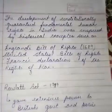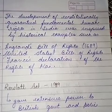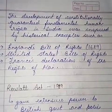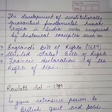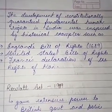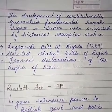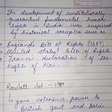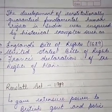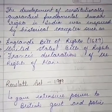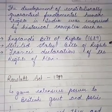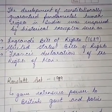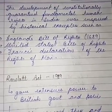The development of constitutionally guaranteed fundamental human rights in India was inspired by historical examples. When fundamental rights came into India, they were based on historically established rights from other constitutions. The key inspirations were: England's Bill of Rights 1689, the United States Bill of Rights, and France's Declaration of the Rights of Man.